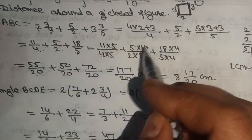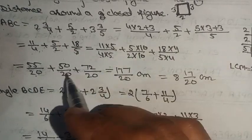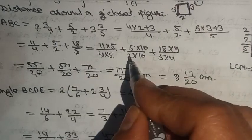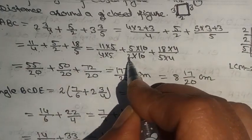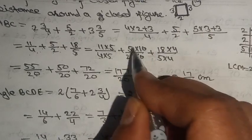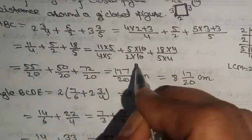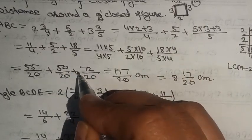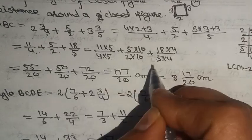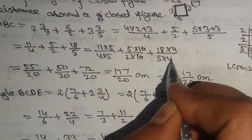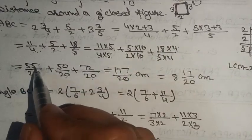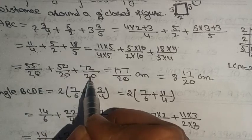5/2 with denominator 20: 5 tens are 50 and 2 tens are 20, so 50/20. Plus 18/5: 5 fours are 20 and 18 fours are 72, so 72/20. Our sum is 55/20 + 50/20 + 72/20.